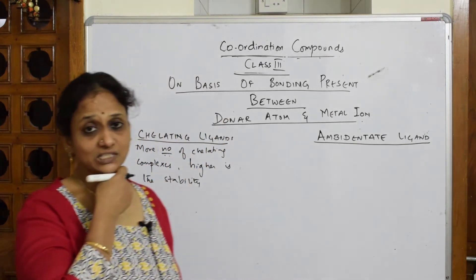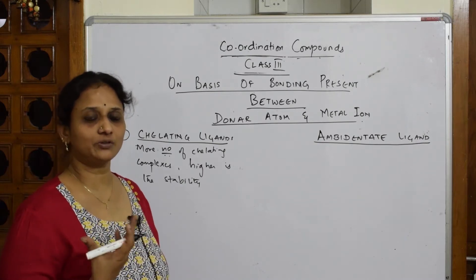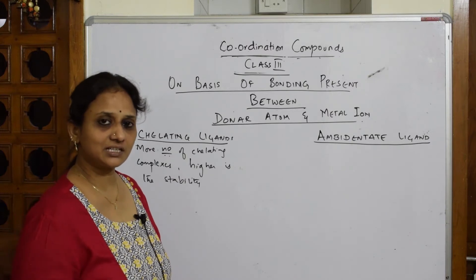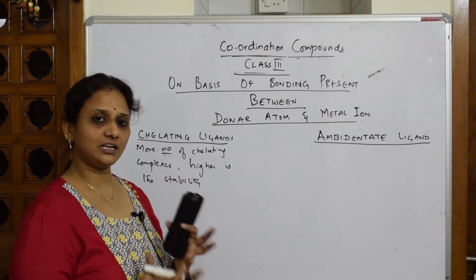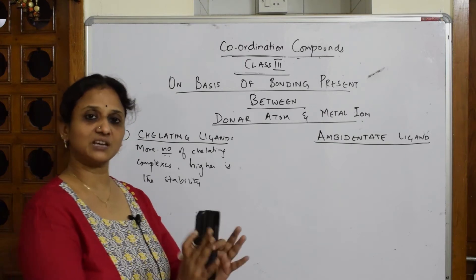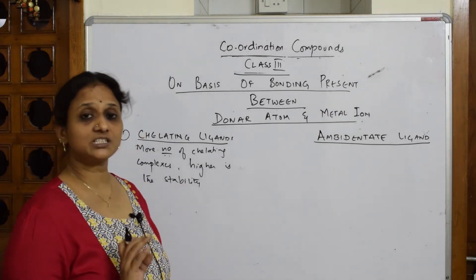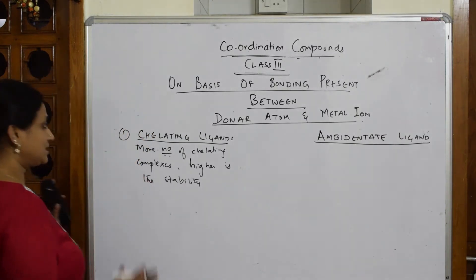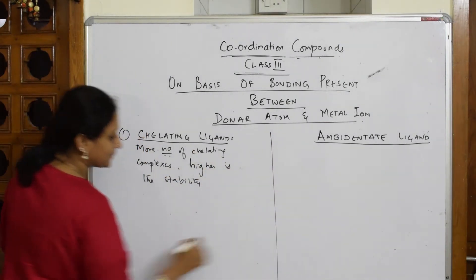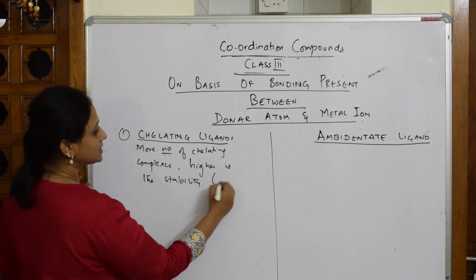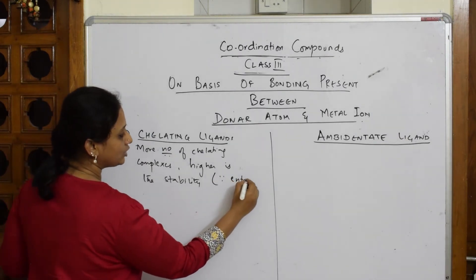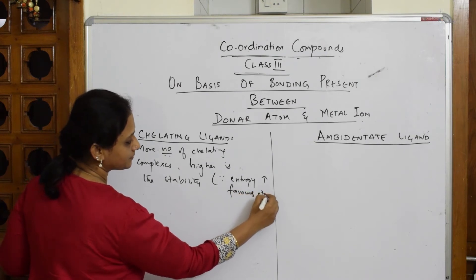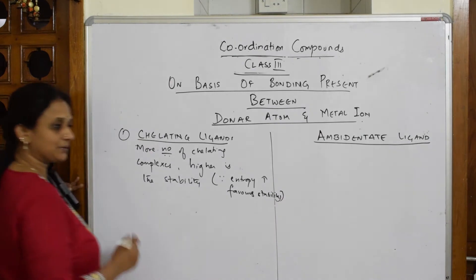How does chelation increase stability? Basically, whenever chelates are formed, entropy starts increasing. When entropy increases, it automatically favors the system and brings it to a stable state. That's the main concept — you've studied this in the thermodynamics chapter as well. So, higher stability is because entropy increases and favors stability.